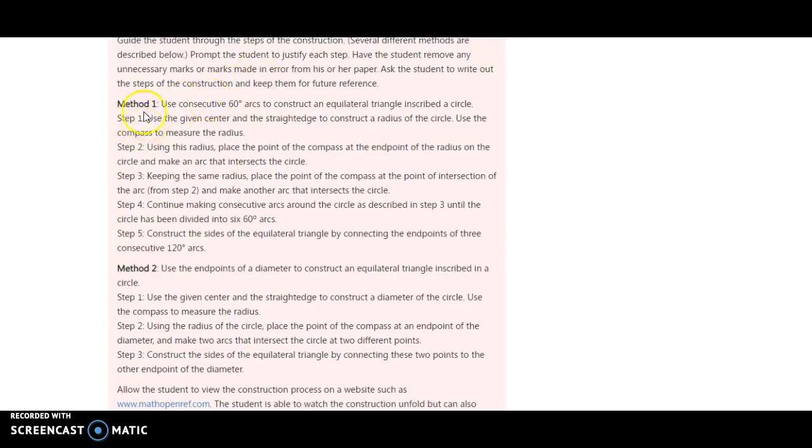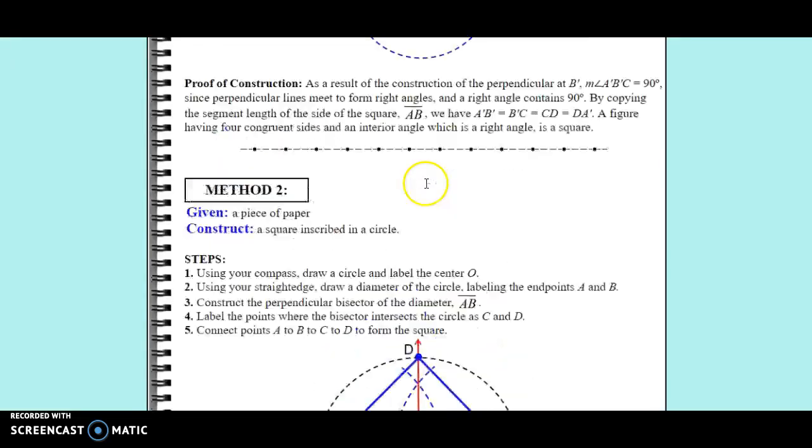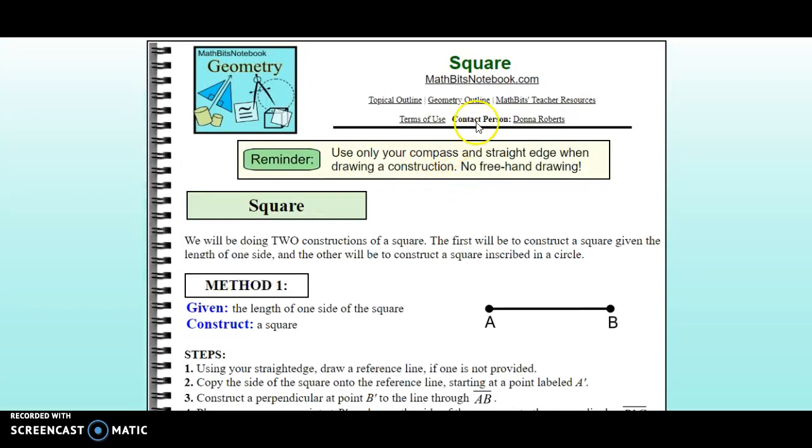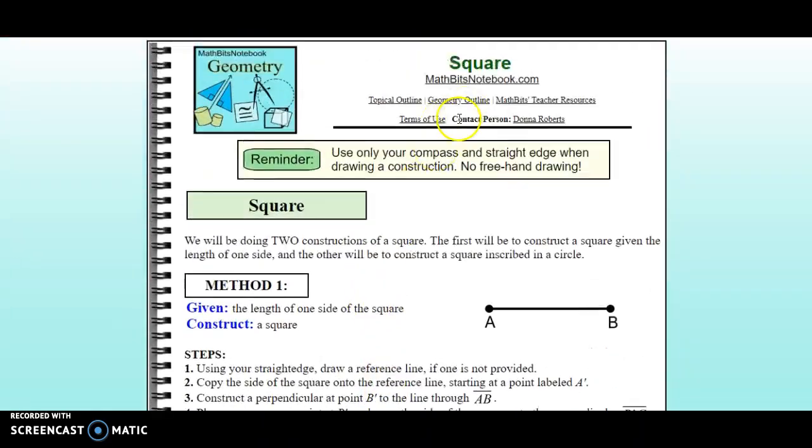So what you want to do is copy all of the directions and put them into your unit activity. And then here I googled how to do the square one. And so you can go ahead, if you find this one, let's see, where did I find that?